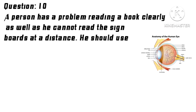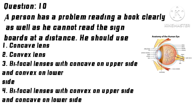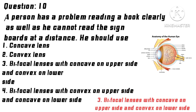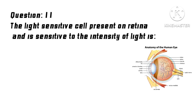Question 10: A person has a problem reading a book clearly as well as cannot read sign boards at a distance. What should they use? Options: 1. Concave lens, 2. Convex lens, 3. Bifocal lenses with concave on upper side and convex on lower side, 4. Bifocal lenses with convex on upper side and concave on lower side. Correct answer: 3. Bifocal lenses with concave on upper side and convex on lower side.